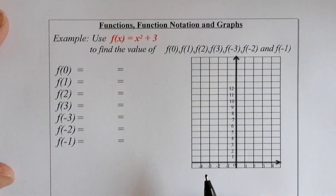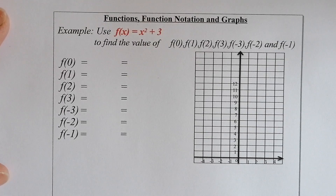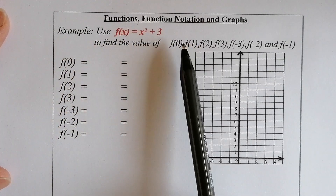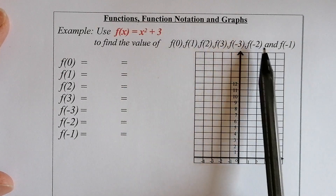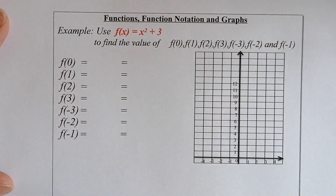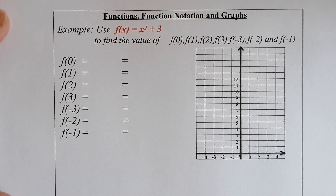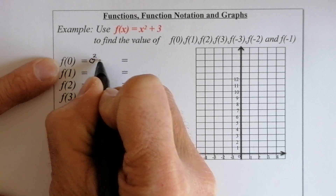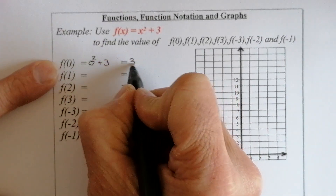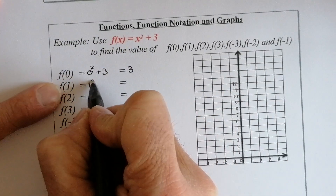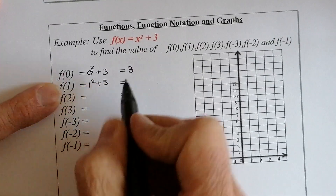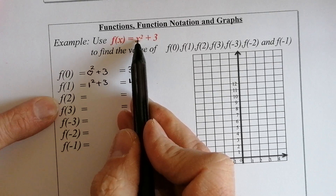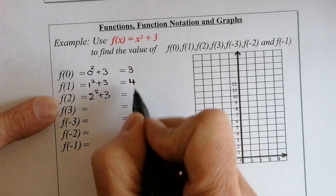Let's try a different function: f of x equals x squared plus three. I want to find f of zero, f of one, f of two, and f of three. f of zero: zero squared plus three equals three. f of one: one squared plus three equals four. f of two: two squared plus three equals four plus three equals seven. f of three: three squared plus three equals nine plus three equals 12.